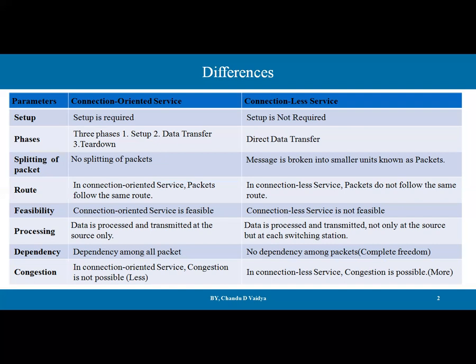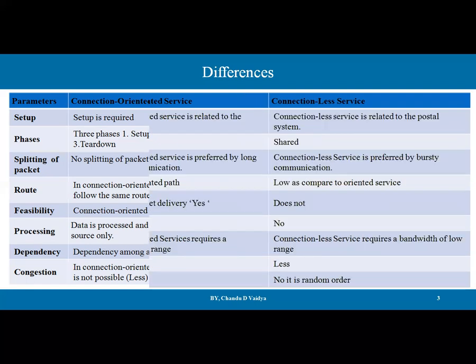Regarding congestion: in connection-oriented service, congestion is not possible — there is less congestion because a dedicated path with full bandwidth is available and the channel is not shared. In connectionless service, congestion is possible because more than one packet can choose the same route. However, connectionless service is a very fast service.